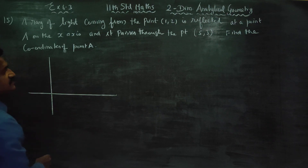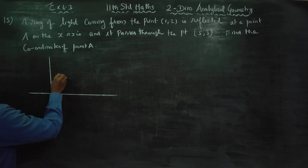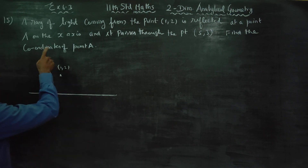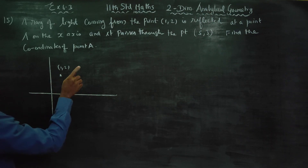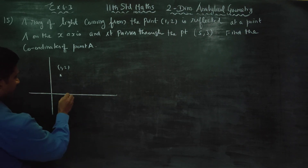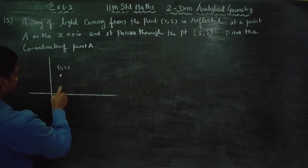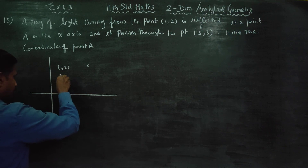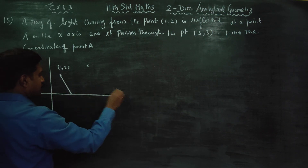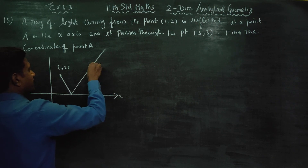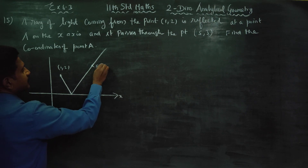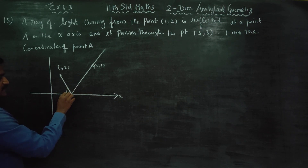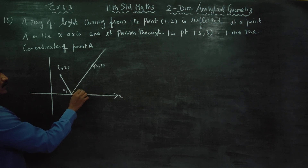A ray of light is reflected at the point A on the x-axis. The angle of incidence is equal to angle of reflection.